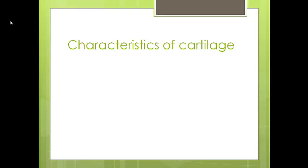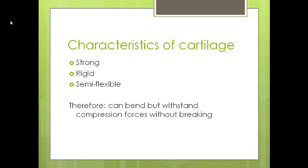Cartilage has certain characteristics: it is strong, rigid, and also semi-flexible. That basically means that you can move it around even though it is generally strong. You need to press on it to get it moving. Cartilage can bend, but it can withstand compression forces without breaking. Even if you apply significant force and bend it and change its shape, cartilage will not break unless the force is very significant.